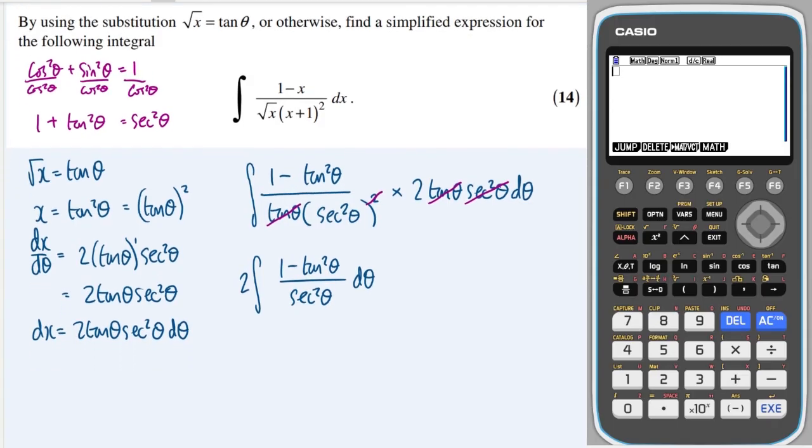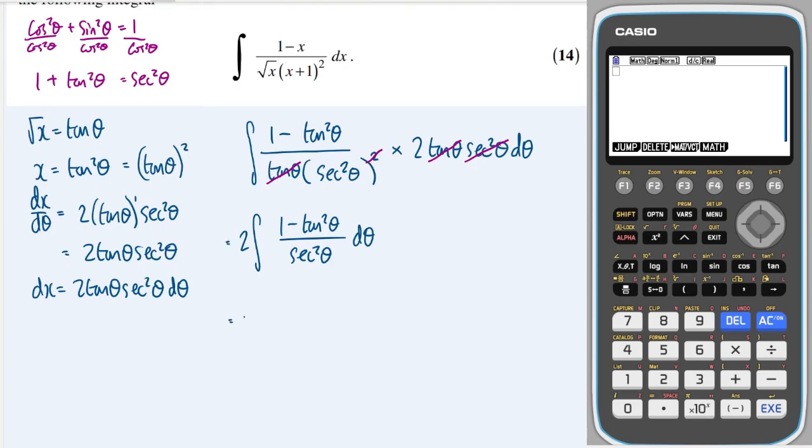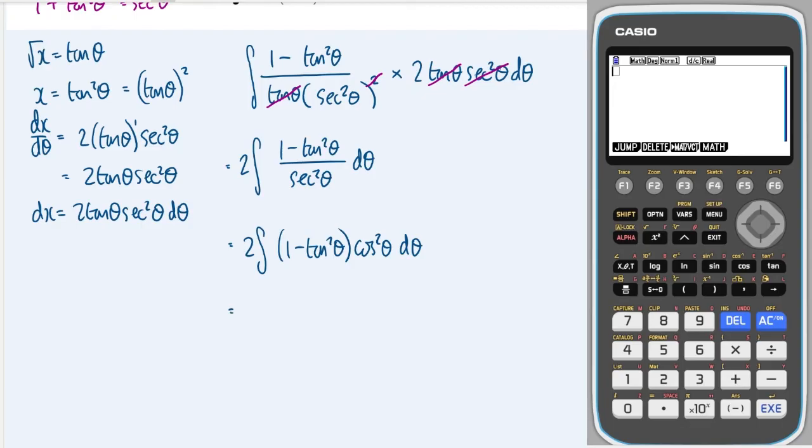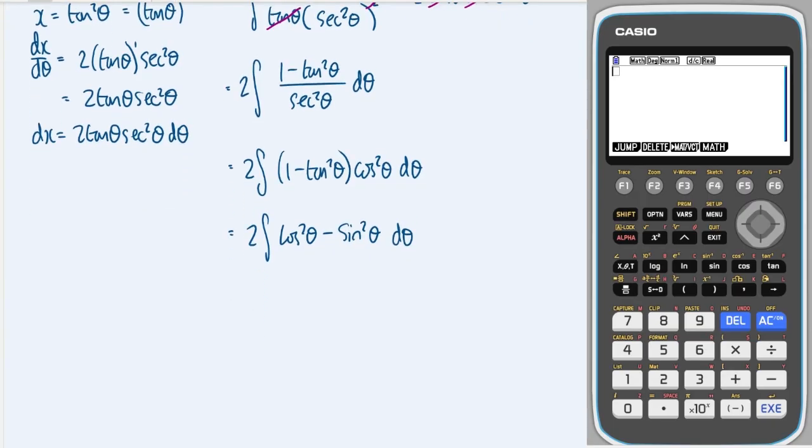And we can rewrite this as, well, sec squared is 1 over cos squared. So if we've got a sec squared on the bottom, it's the same as having a cos squared on the top. So it's 1 minus tan squared theta cos squared theta. And then we can expand out to get a cos squared theta minus and a tan squared times by a cos squared. Well, tan squared is sine squared over cos squared. So that over cos squared will cancel with this cos squared here and just leave me with a sine squared. And hopefully you can spot this trig identity because cos squared minus sine squared is the same as cos 2 theta. It's a double angle formula for cos.